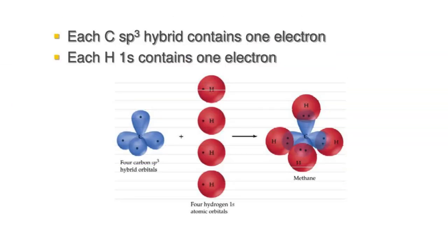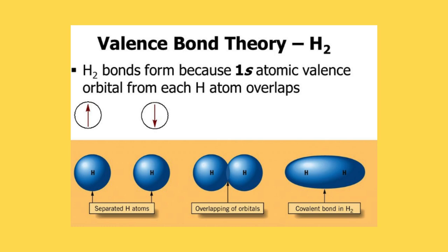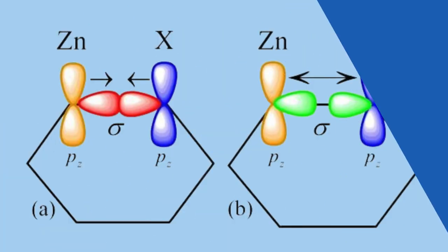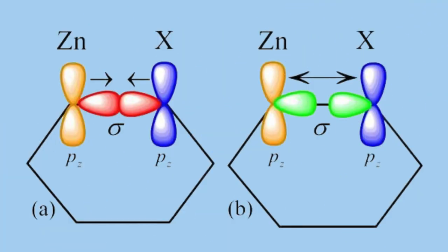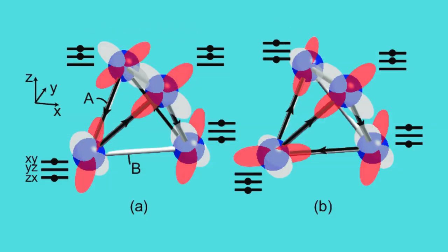Valence bond theory is great for understanding simple molecules and gives us a strong framework for predicting shapes and bond types. On the other hand, molecular orbital theory is more powerful for complex molecules and properties like color and magnetic behavior.